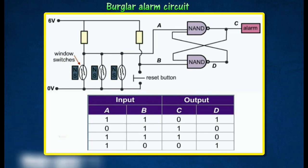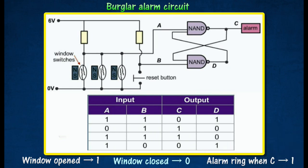Each window has a switch that is off when the window is closed and on when the window is opened. Inputs A and B are at logic 0 when the switch is off and 1 when the switch is on.